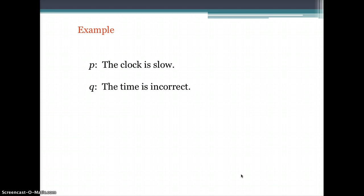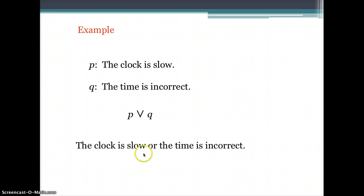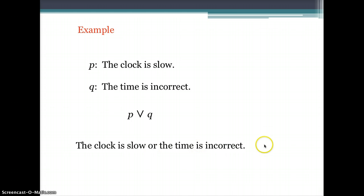For example, P is 'the clock is slow' and Q is 'the time is incorrect.' Writing P or Q gives: the clock is slow or the time is incorrect. Both could be true, making the compound statement true. If only one is true and the other false, the statement is still true.